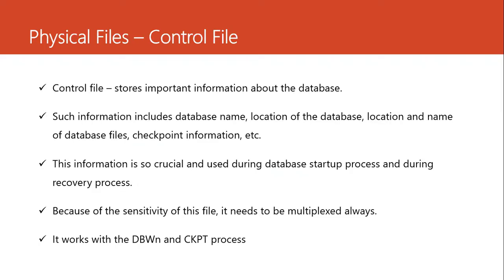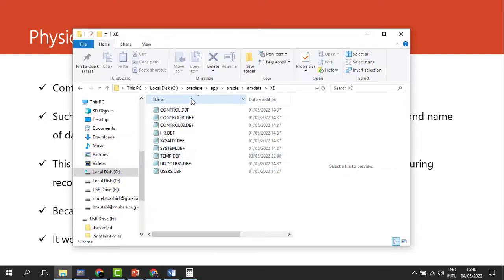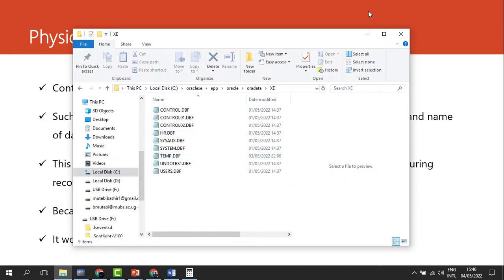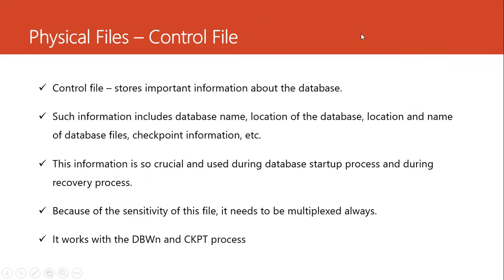With the physical storage structures, we mean files that are visible to the operating system. These are the different files — the data files, the control files, the parameter files, and so much more. These files that are visible to the operating system, the ones we can check and see, are the ones we call the physical files. You can see them. But the logical storage structures, we cannot see them — we cannot point to a tablespace and say, this is it.